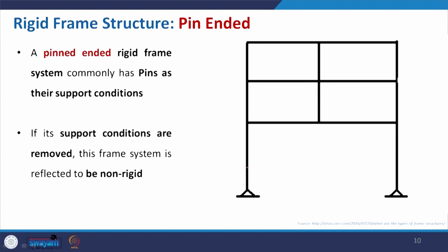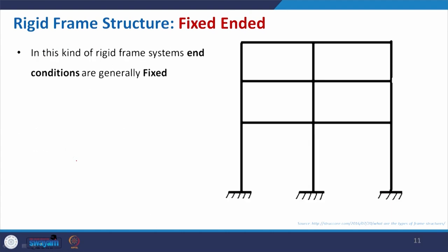Coming to the pin-ended joint rigid frame structure — a pin-ended rigid frame system commonly has pins as their support condition. Here in this portion they are joined with this pin support. If this support pin is removed, it will be considered non-rigid, meaning without the support condition it will be a non-rigid structure. For the fixed-end type, the particular representation of the structure has changed and it is shown as fixed end.